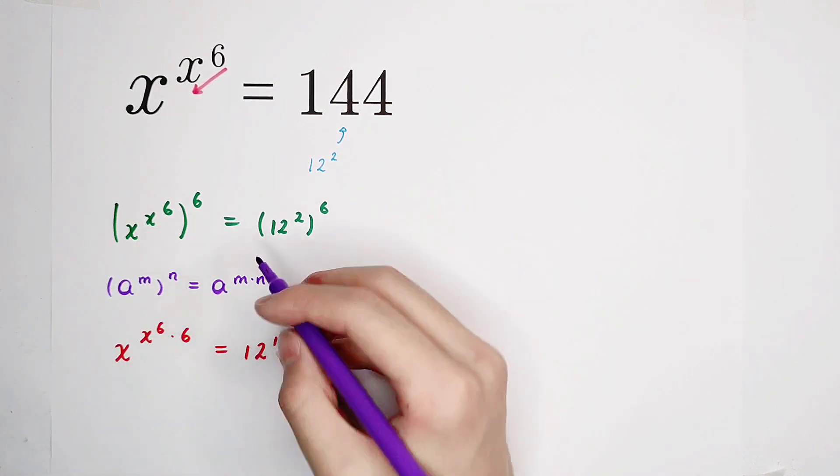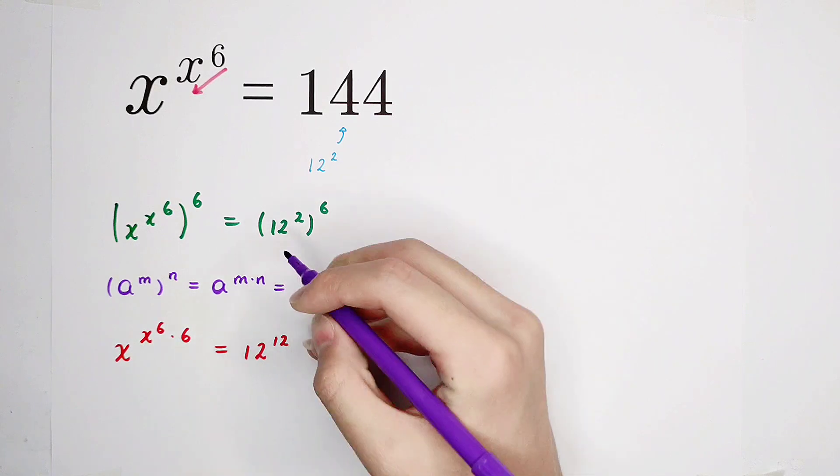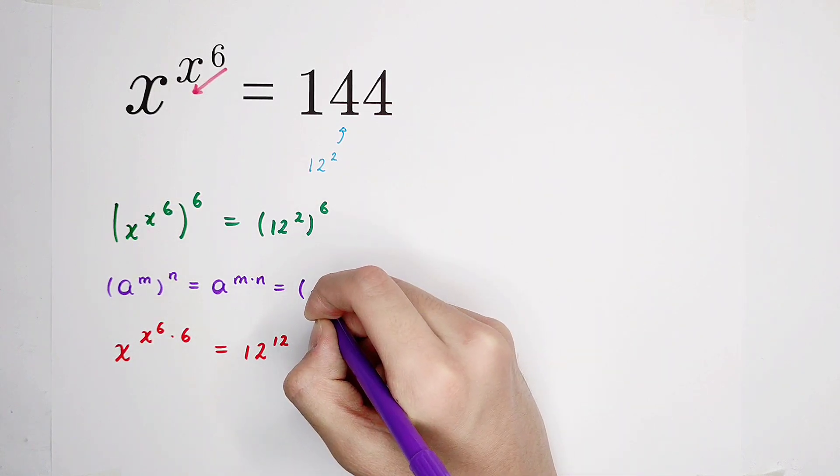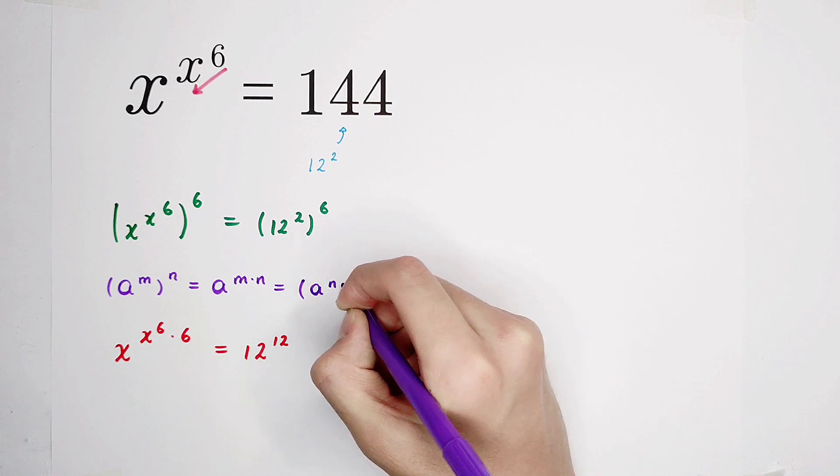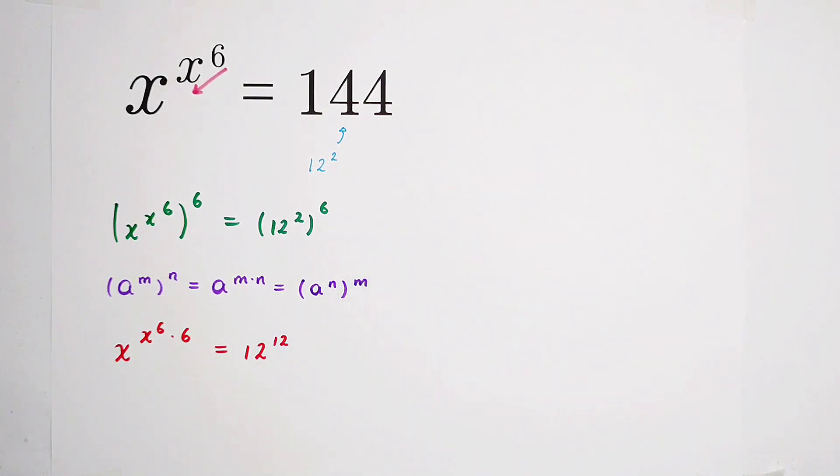However, these two are also equal to a to the power of n all to the power of m. On the exponent, for multiplications, we can switch their order. So it is the same thing as x to the power of 6 all to the power of x to the power of 6, equals 12 to the power of 12.